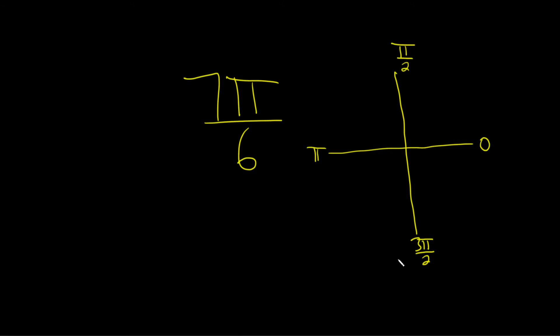So to figure out where 7π over 6 is, you want to think of π as a number over 6. You can do that by thinking of it as 6π over 6.